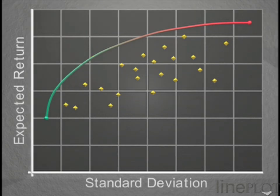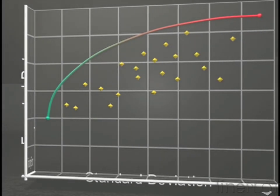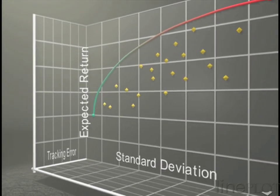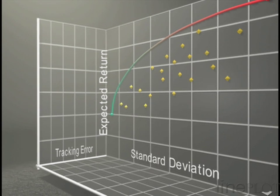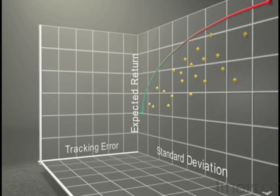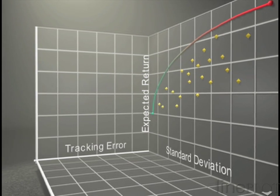Many investors care about relative performance as well as absolute performance. Risk within this context is defined as tracking error, which measures the volatility of relative returns. We can extend our two-dimensional graph to include a third dimension for tracking error.